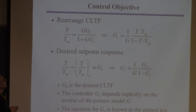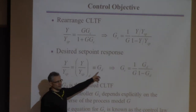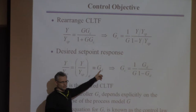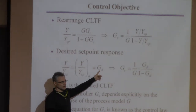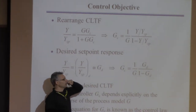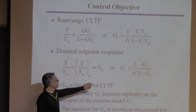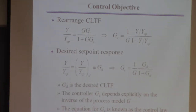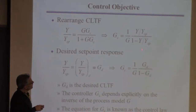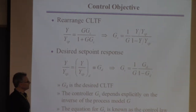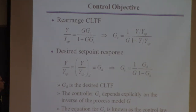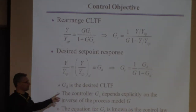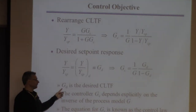The difference is: I'm specifying that this thing should equal Gd and solving for Gc. What I used to do is specify Gc and then figure out what the response was. Now it's the reverse: instead of specifying the controller and figuring out the response, I'll specify what I want the response to be and figure out the controller. This is the basic design equation, where Gd is the desired closed-loop transfer function.